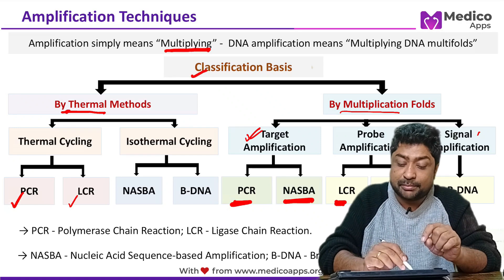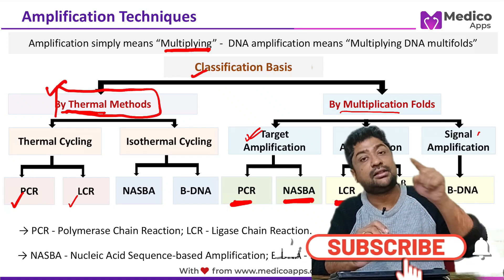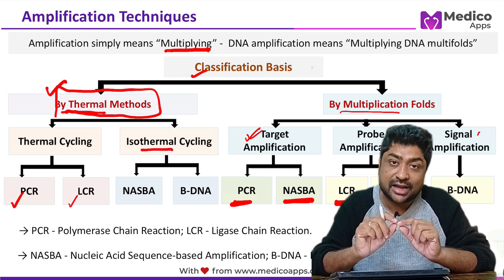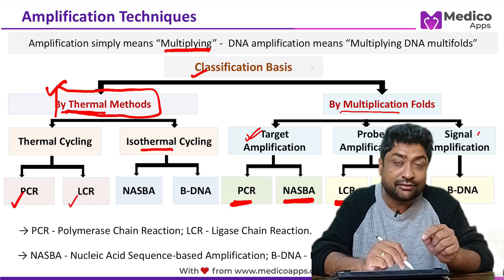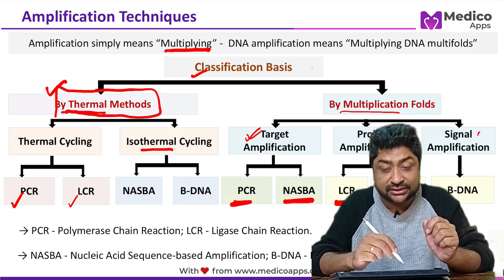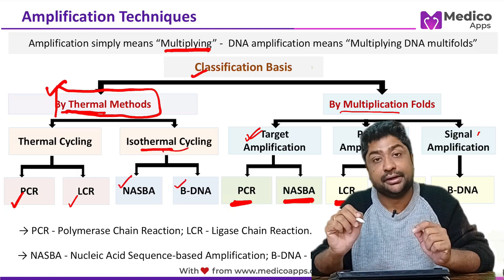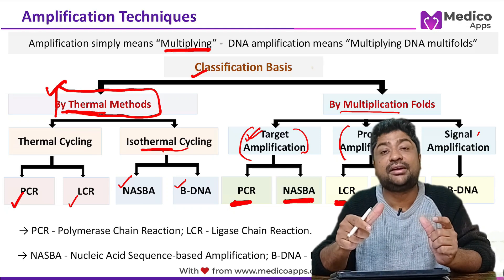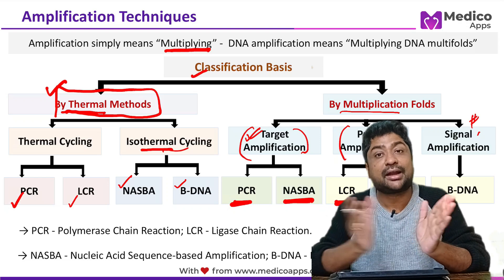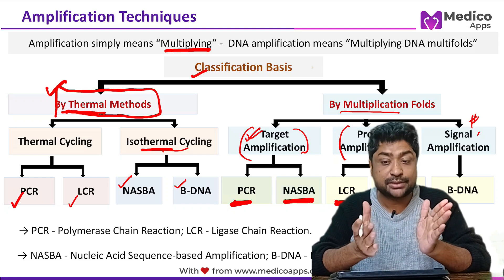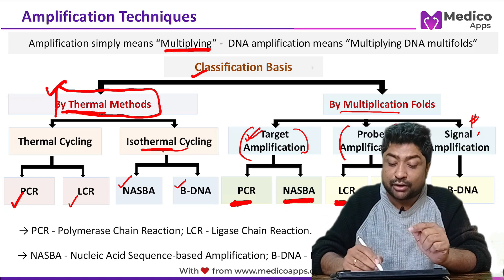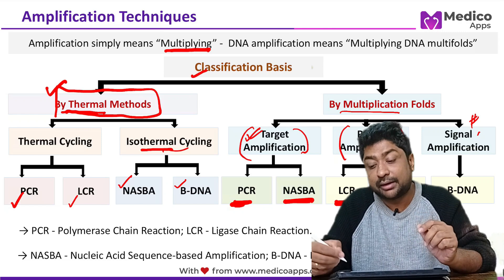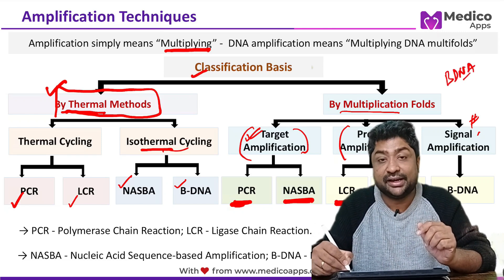To summarize: you can classify based on whether amplification happens in a cyclical thermal manner — temperature increases, stays constant, decreases, increases again — or at a single constant temperature. Thermal cycling includes PCR and ligase chain reaction; isothermal includes NASBA and BDNA. Based on what is amplified: PCR and NASBA for target amplification, LCR and Qbeta replicase for probe amplification, and BDNA for signal amplification.